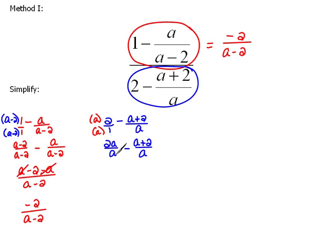Now we can put these together as a single fraction over that common denominator of a. So here we'd have two a minus a plus two. Since we are subtracting off a binomial, remember that we have to distribute that negative. So this is going to be minus a minus two. And then we can continue simplifying. So two a minus a would be a minus two all over a. So this simplifies into a minus two over a.